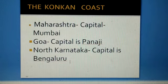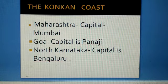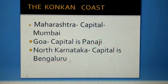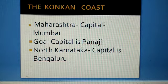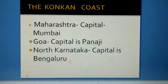Second comes the Konkan coast. The states which lie here are Maharashtra, Goa, and some northern parts of Karnataka. The capital of Maharashtra is Mumbai, the capital of Goa is Panaji, and the capital of Karnataka is Bengaluru.